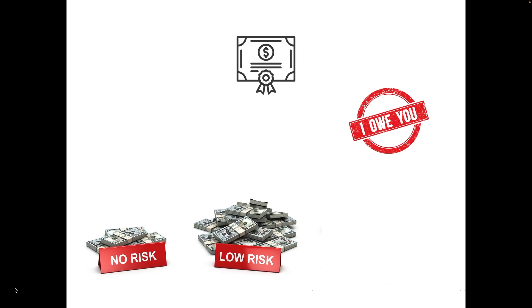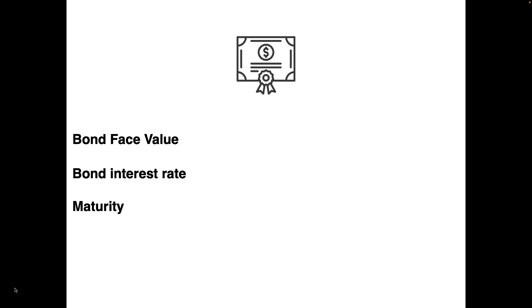Every bond document has three major components: a face value that tells the purchaser what the bond will pay on maturity, the maturity time (how long it takes for the bond to pay the face value), and the interest rate that the bond will pay.